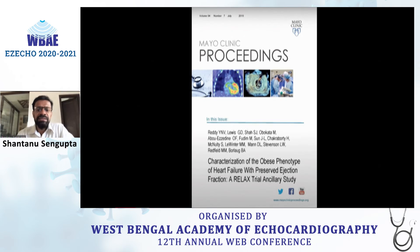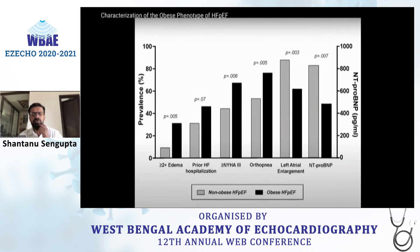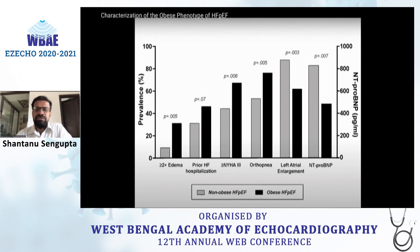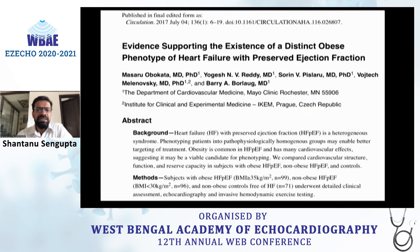A second subgroup of phenotyping came from Barry Borlaug's group, reported in Mayo Clinic Proceedings, where they divided HFpEF into non-obese and obese groups. Obese patients have more edema, more hospitalizations, more symptoms, and more orthopnea. Interestingly, LA enlargement is lesser in the obese group, and NT-proBNP is also lesser in the obese group — consistent with what Sanjeev Shah's group also reported. BMI must always be noted in this group of patients.